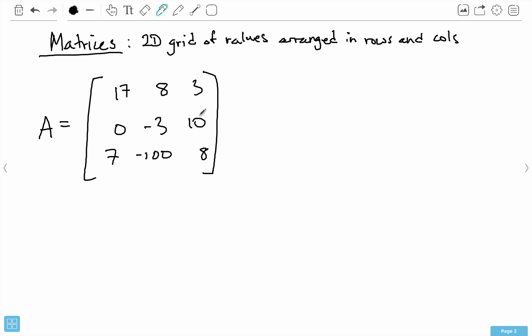This matrix A has three rows and three columns because I can count the number of rows and the number of columns. Inside of this matrix we have these things called entries.